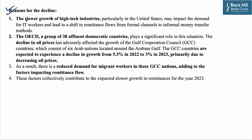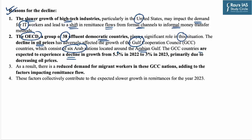The reasons for the decline include: the slower growth of high-tech industries, particularly in the United States, which may impact demand for IT workers and lead to a shift in remittance flows from formal channels to informal money transfer methods. Also, the OECD — a group of 38 affluent democratic countries — plays a significant role. The decline in oil prices has adversely affected growth of the Gulf Cooperation Council (GCC), consisting of six Arab nations around the Arabian Gulf. GCC countries are expected to see growth decline from 5.3% in 2022 to 3% in 2023, reducing demand for migrant workers.